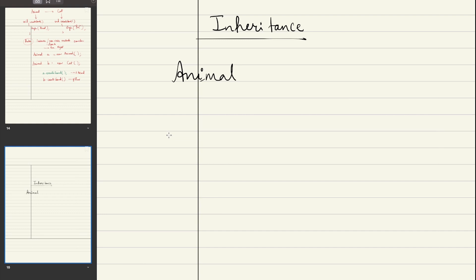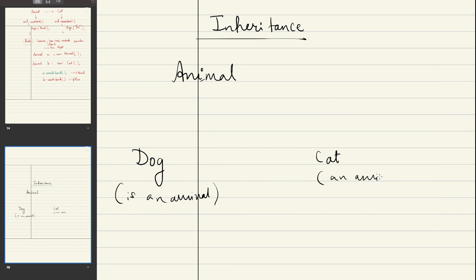Specifically, I might also create a class called dog, and I can also create a class called cat. Now, how does it relate to animal? Dog is also an animal — I can write 'dog is an animal.' Cat is also an animal. These are like specialized cases of the main concept, animal.